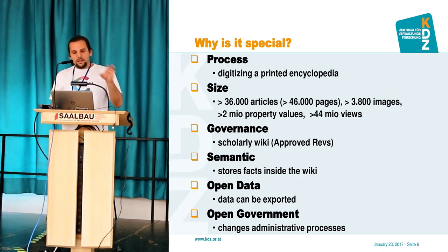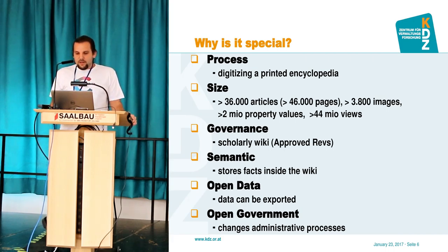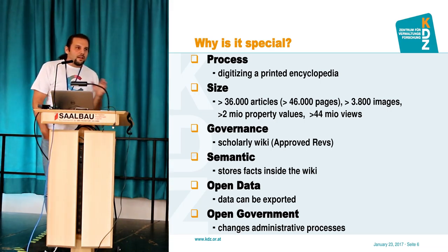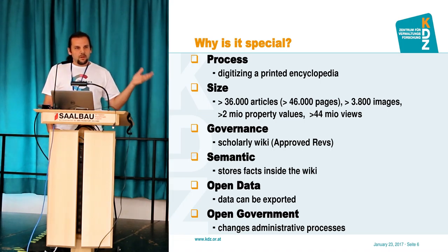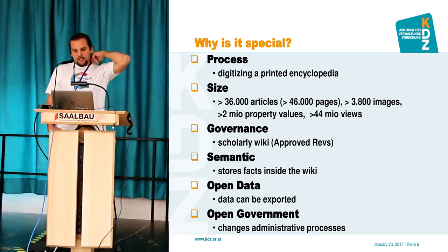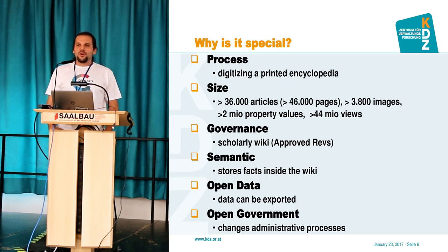Why is this project special? First, the process: it was about digitizing a printed encyclopedia as the first base content. It's also the size — there are bigger wikis around, but I think it's the largest city wiki now, with 36,000 articles. Interesting is also the governance approach. It is basically an open wiki — you can sign up for a user account and edit, but your edit will not be shown immediately. We use Approved Revs for that, so there is an editorial team that checks edits before they are visible. And of course it is semantic.